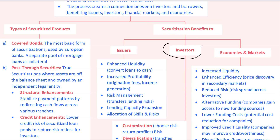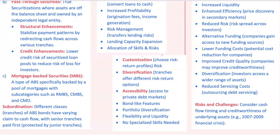For investors, securitization brings its own unique set of perks. One of the most attractive aspects is customization. ABS are structured with different risk-return profiles, so investors can choose securities that align with their goals, whether they prefer safer investments or are willing to take on more risk for higher potential returns. ABS also make it possible for investors to diversify their portfolios without diving into direct loan management. For instance, pension funds often invest in ABS to match their long-term liabilities with the stable income streams these securities provide. Securitization offers accessibility to private debt markets, making it possible for investors to diversify and earn bond-like returns without the need to handle loan servicing or credit checks themselves.